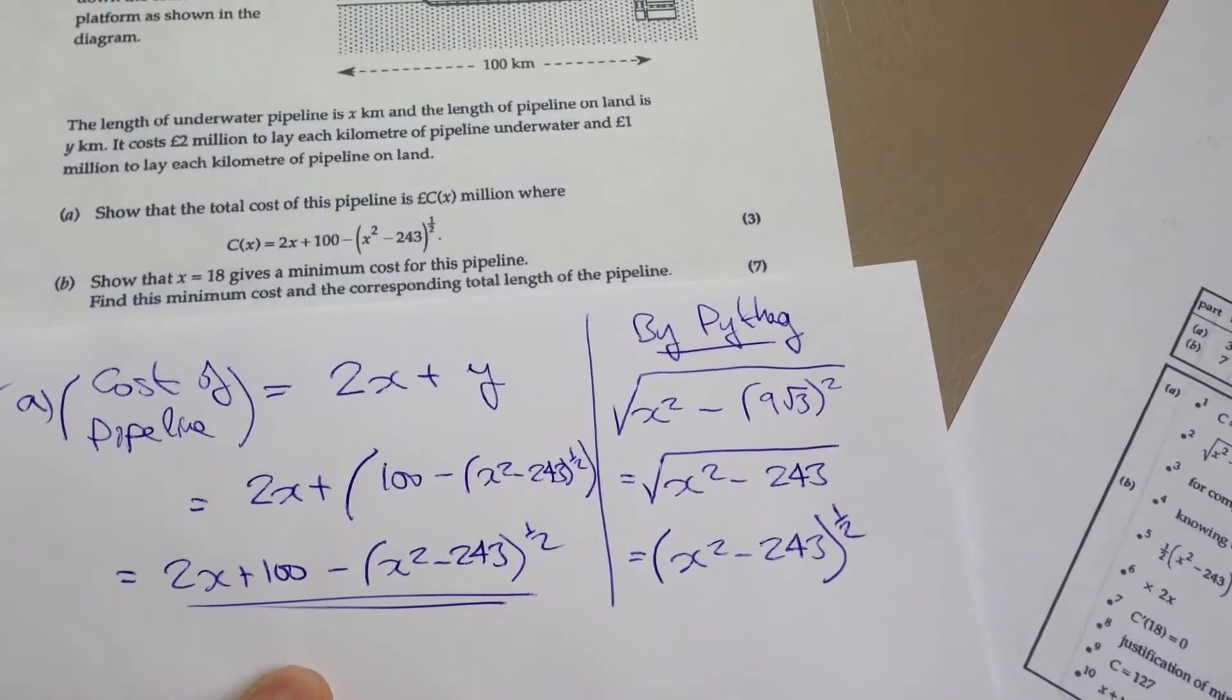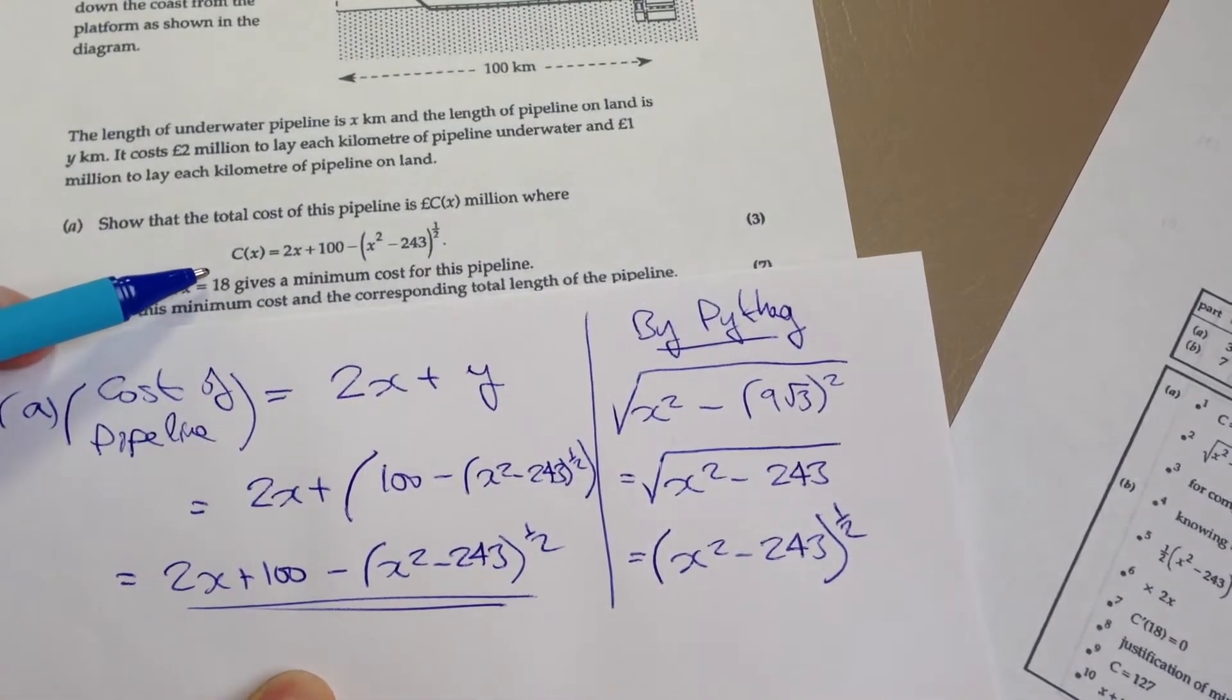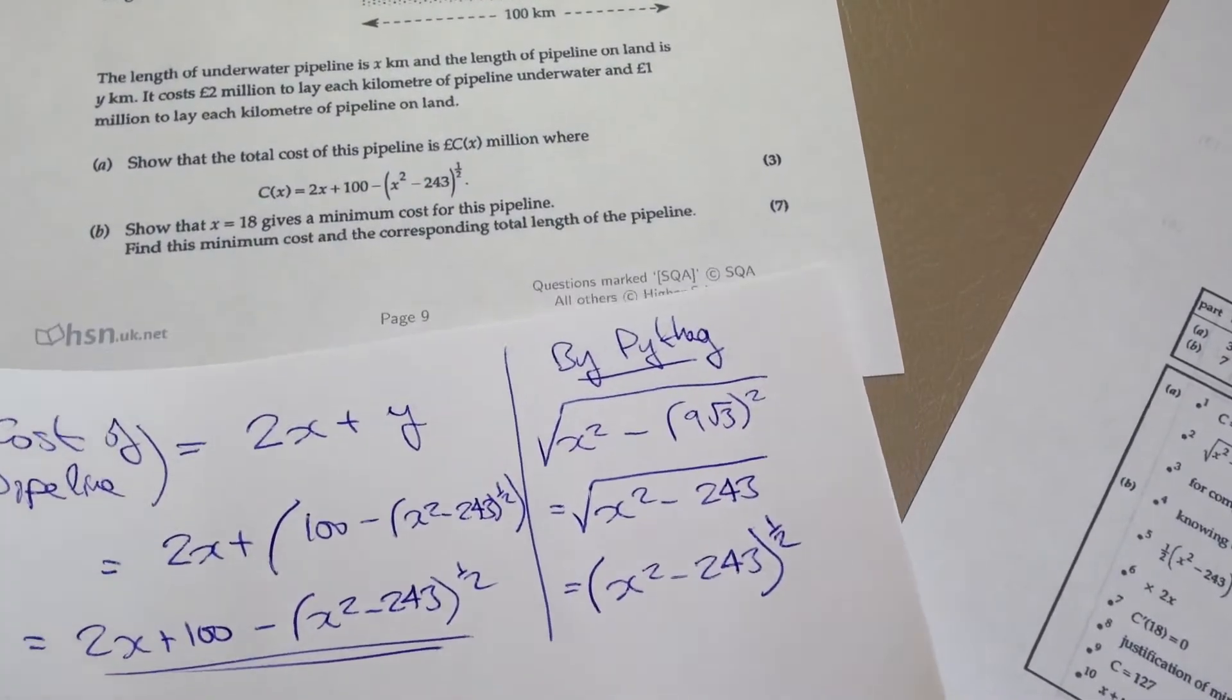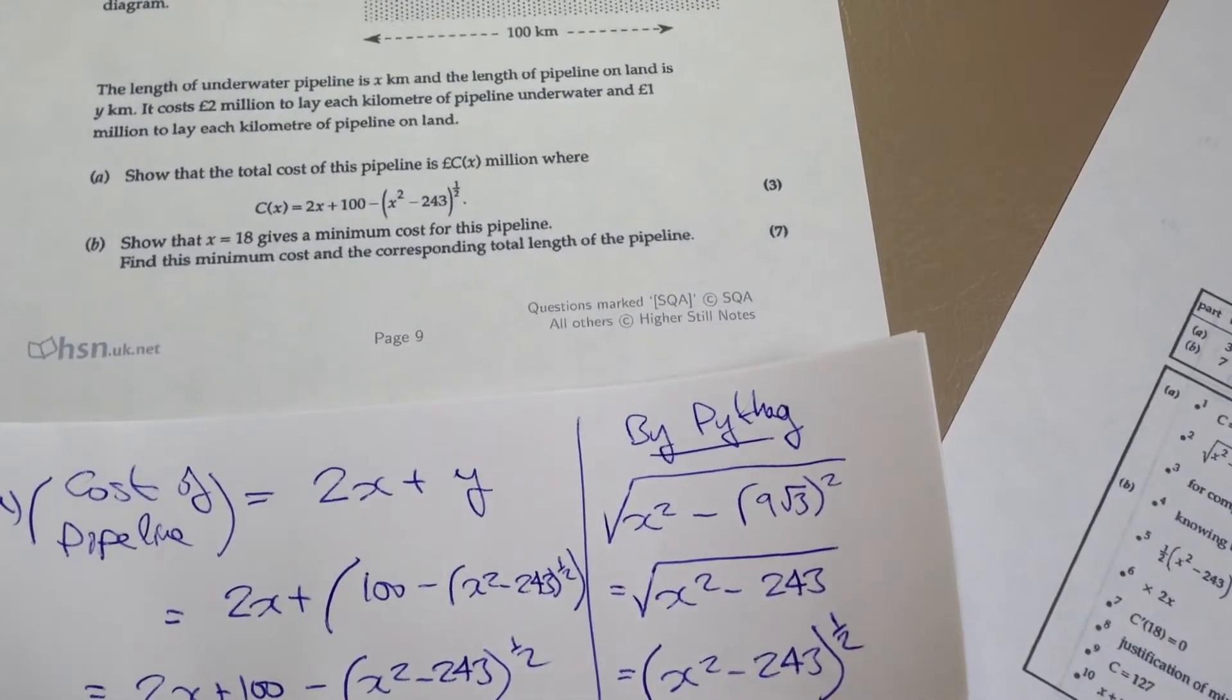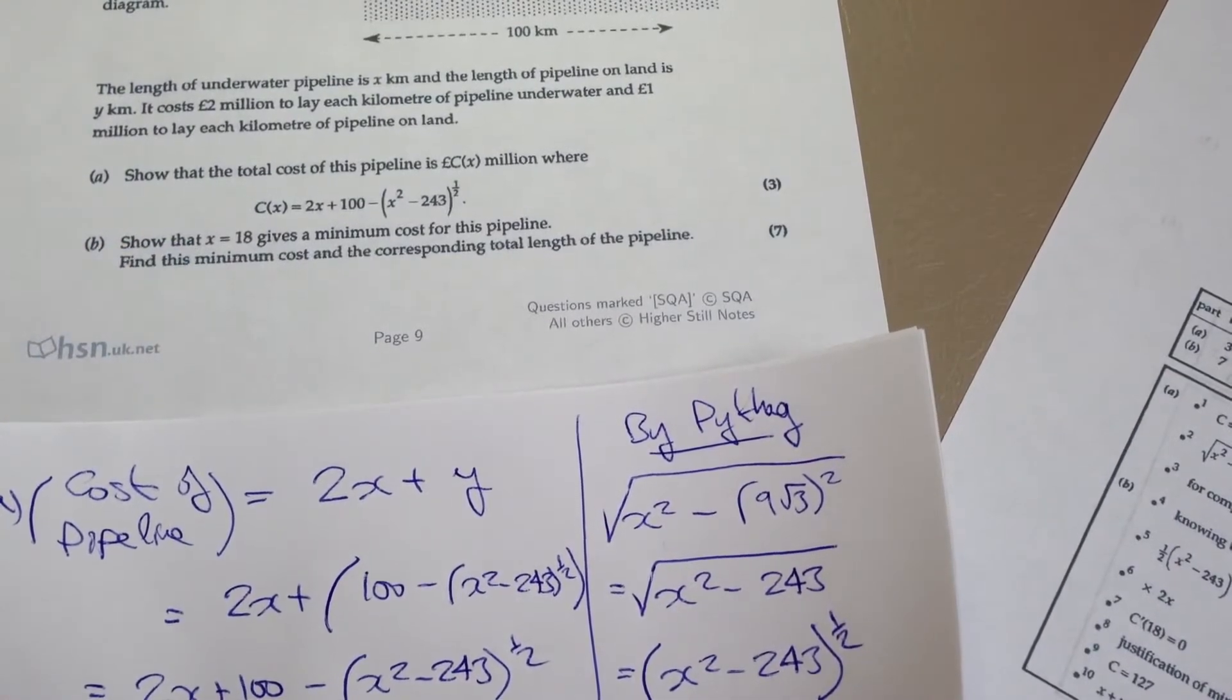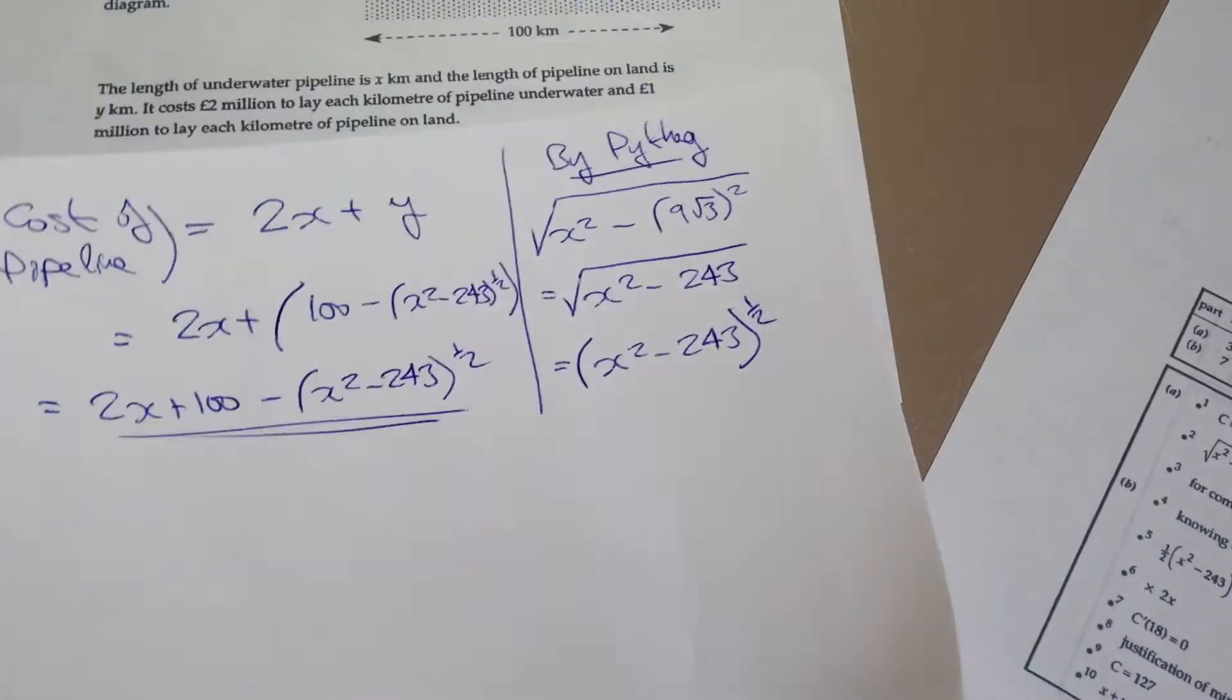So once again you'll notice that there tends to be a fairly common theme in the first part of optimization questions where you start off with a fairly logical method of how to do it, and you'll quickly realize that one of your variables is not actually involved in the question itself. So you have to figure out a way to rewrite that in terms of the other variable. And that's basically what we do in almost every part A for optimization. So let's go on to part B. In part B we've been asked to show that x equals 18 gives a minimum cost for this pipeline. So once again that is the minimum turning point. So we need to differentiate, make it equal to zero, solve for x, and then show via nature table that it is in fact a minimum turning point.